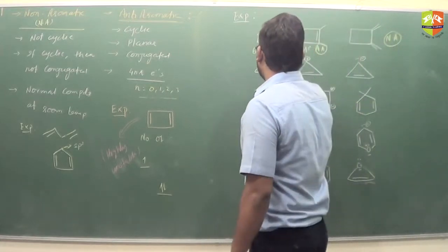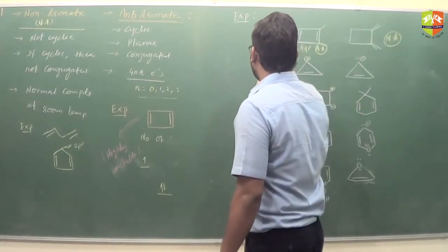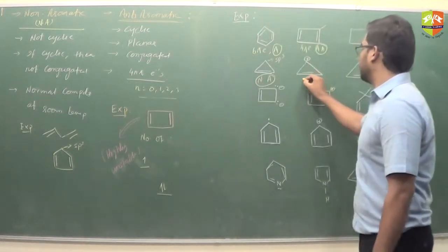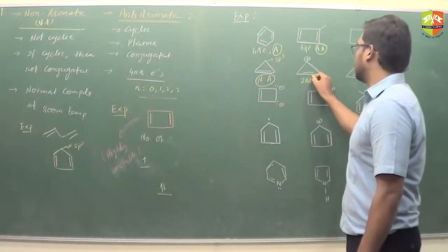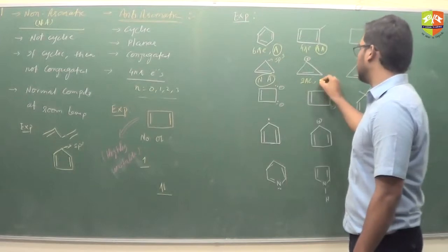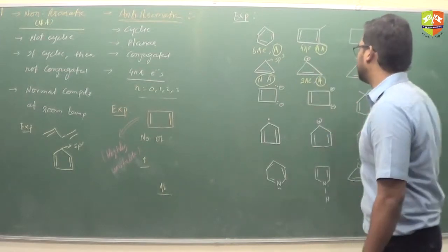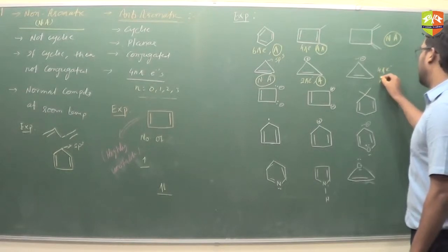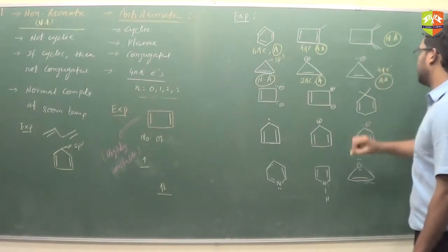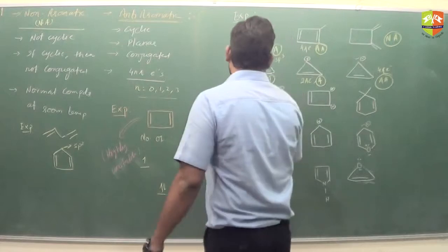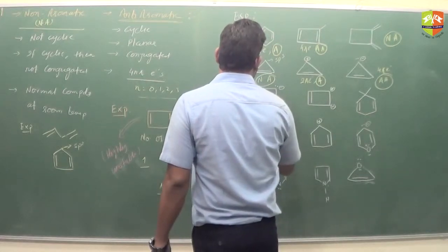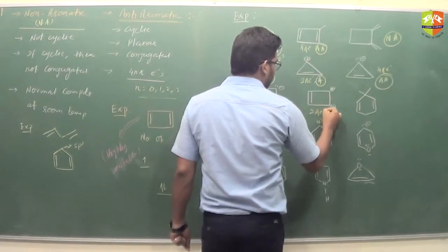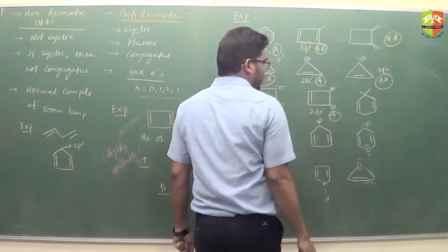This carbon atom is sp3, so it is non-aromatic. It has 2 pi electrons; for n equals 0, the Hückel rule is satisfied, so it is aromatic. It has 4 pi electrons — anti-aromatic. It has 6 pi electrons — aromatic. It has 2 pi electrons — aromatic.